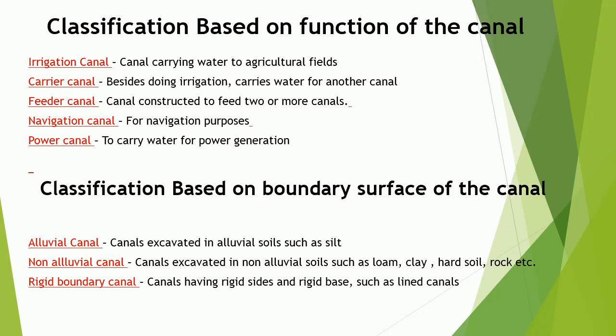Classification based on function of the canal: canals can be classified into five types. Irrigation canal — canals carrying water to agricultural fields. Carrier canal — besides doing irrigation, carries water for another canal. Feeder canal — constructed to feed two or more canals. Navigation canal — used for navigation purposes. Power canal — used to carry water for power generation.